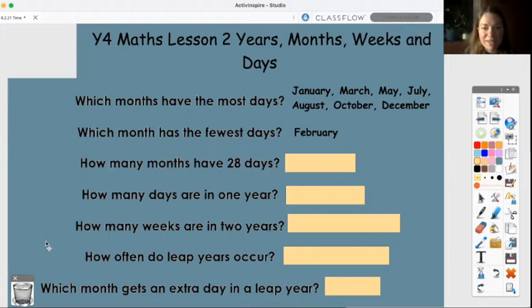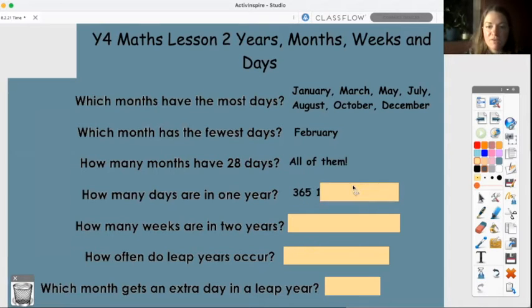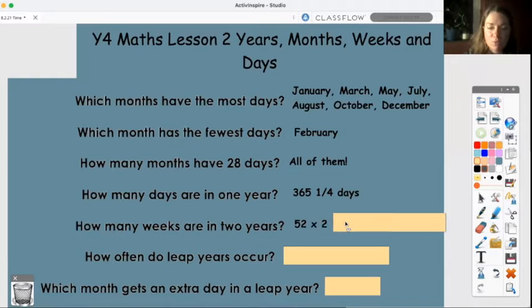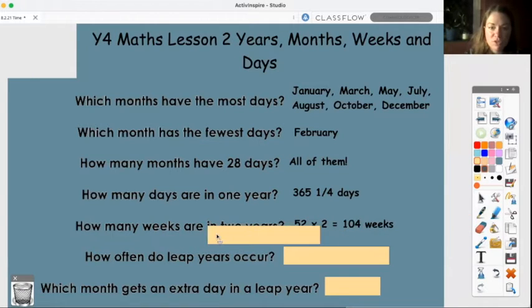How many months have 28 days? Now, I believe this one is a bit of a trick question. There are two different ways that you can answer this question. February, the total number of days in February is 28. However, all of the months have 28 days, because most of them have more. So it depends on how tricky you want to be when answering that one. How many days are in one year? 365 and a quarter days, unless it's a leap year, where we have 366 days. How many weeks are in two years? Well, as we discussed earlier, there are 52 weeks in one year. So multiply that by two, double it, 104 weeks.